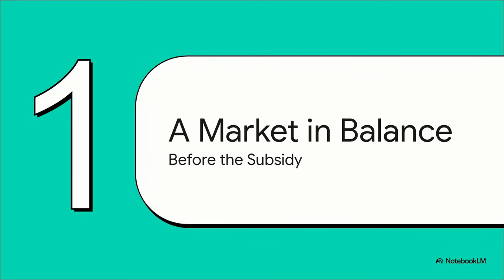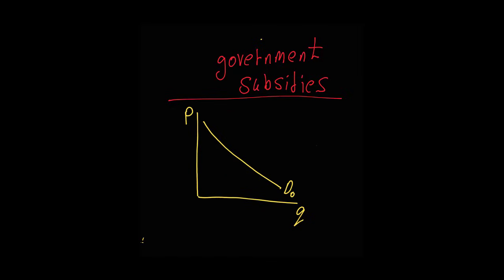All right, to crack this puzzle open, we've got to go back to basics. We need to see how a market works before the government steps in and shakes things up. Let's build a quick picture. It all starts with us, the buyers. And our behavior is pretty predictable. When the price of something is crazy high, we buy less of it. When that price drops, we want more. That simple relationship between price and how much we want to buy creates what economists call the demand curve. And it always slopes downward.